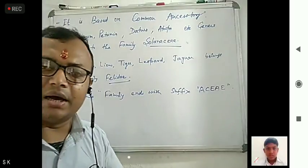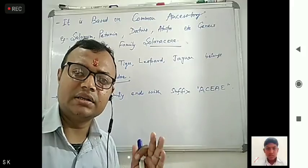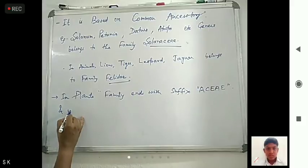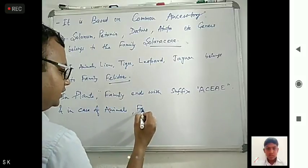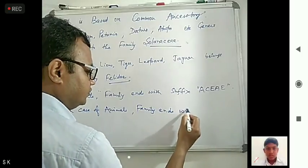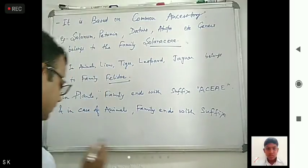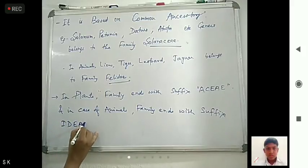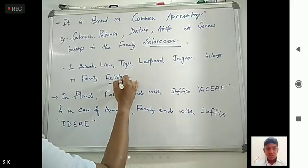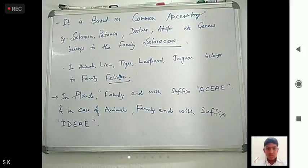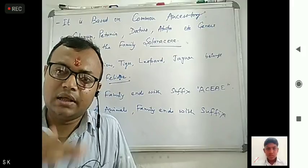In case of animals, the family name ends with the suffix '-idae'. For example, Felidae ends with '-idae'. So this is the rule regarding family names. Now the next hierarchy above family is Order.